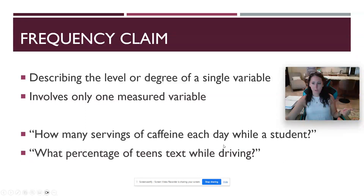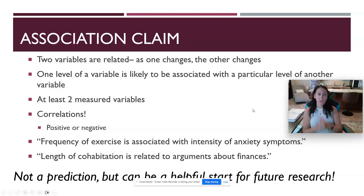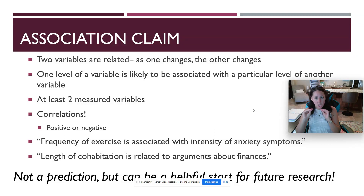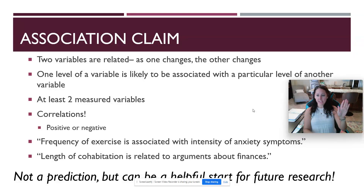The next type of claim is an association claim. An association claim is where I am trying to propose that there's a relationship between two variables, but the important thing here is I cannot propose that it's a cause and effect relationship. I am proposing that two variables are related, or my study has indicated that two variables are related — as one changes, the other changes. This is what we refer to as a correlation.